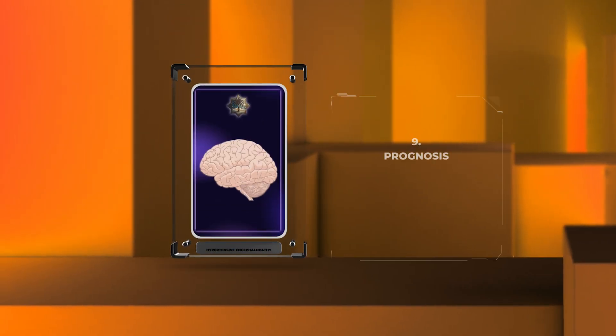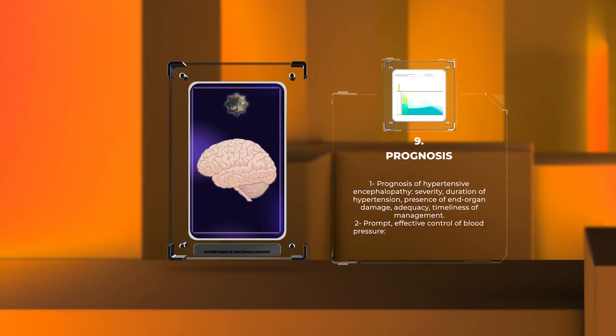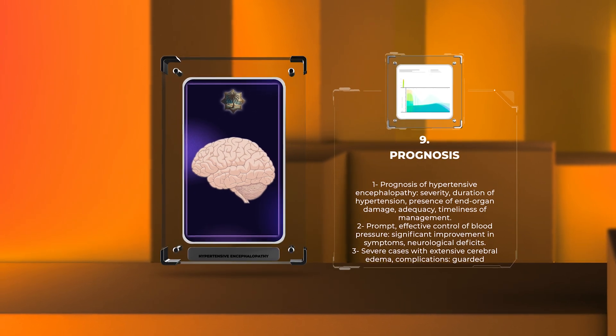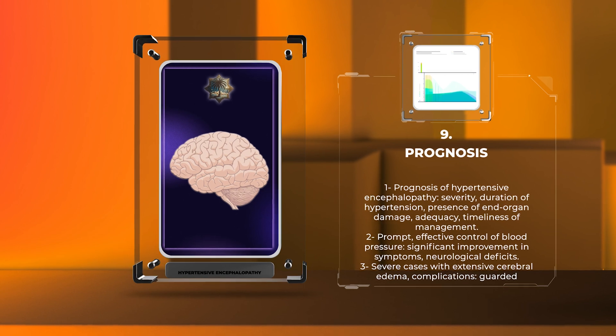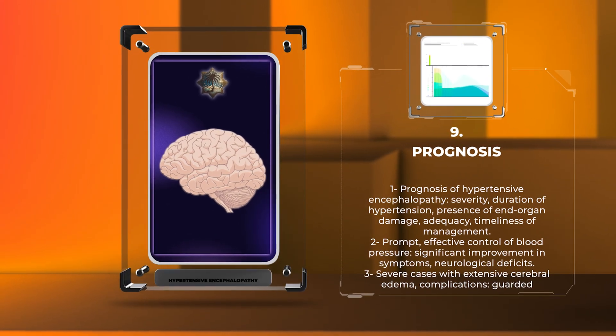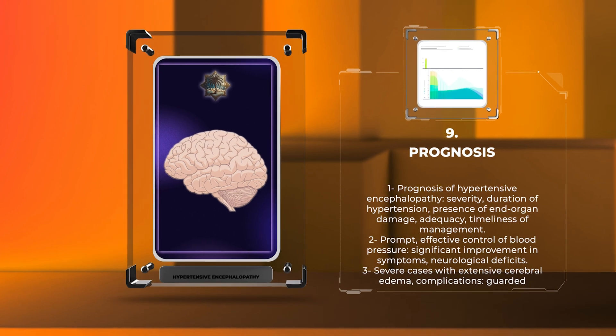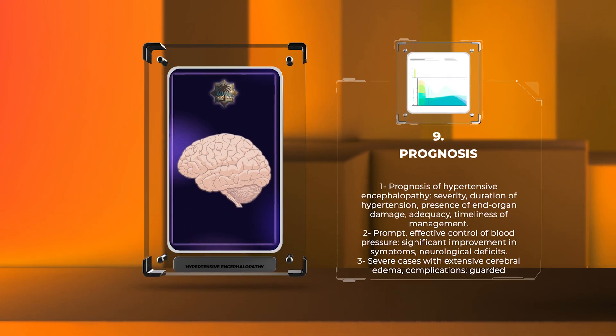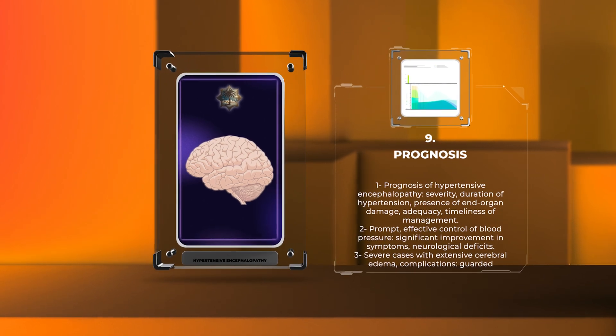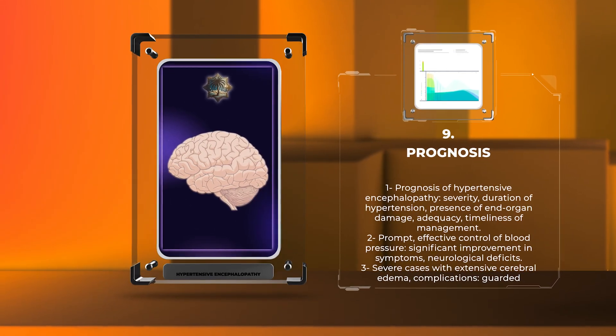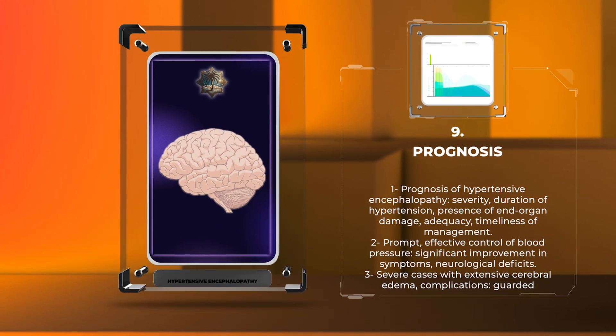The prognosis of hypertensive encephalopathy largely depends on the severity and duration of hypertension, the presence of end-organ damage, and the adequacy and timeliness of management. With prompt and effective control of blood pressure, most patients experience significant improvement in symptoms and neurological deficits. However, in severe cases with extensive cerebral edema or complications such as intracranial hemorrhage, the prognosis may be guarded, and long-term neurological sequelae may occur.